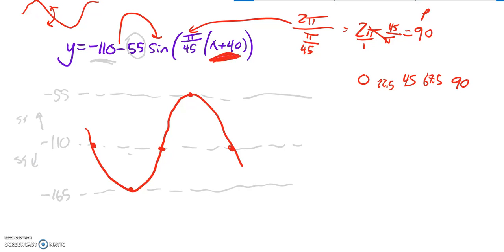But this has been shifted. It's been shifted to the left 40. So I need to subtract 40 from each of these. So let's get this down. 0 minus 40 is negative 40. 22.5 minus 40 is negative 17.5. 45 minus 40 is 5. 67.5 minus 40 is 27.5. And then 90 minus 40 is 50. So there's my X values for my important points.